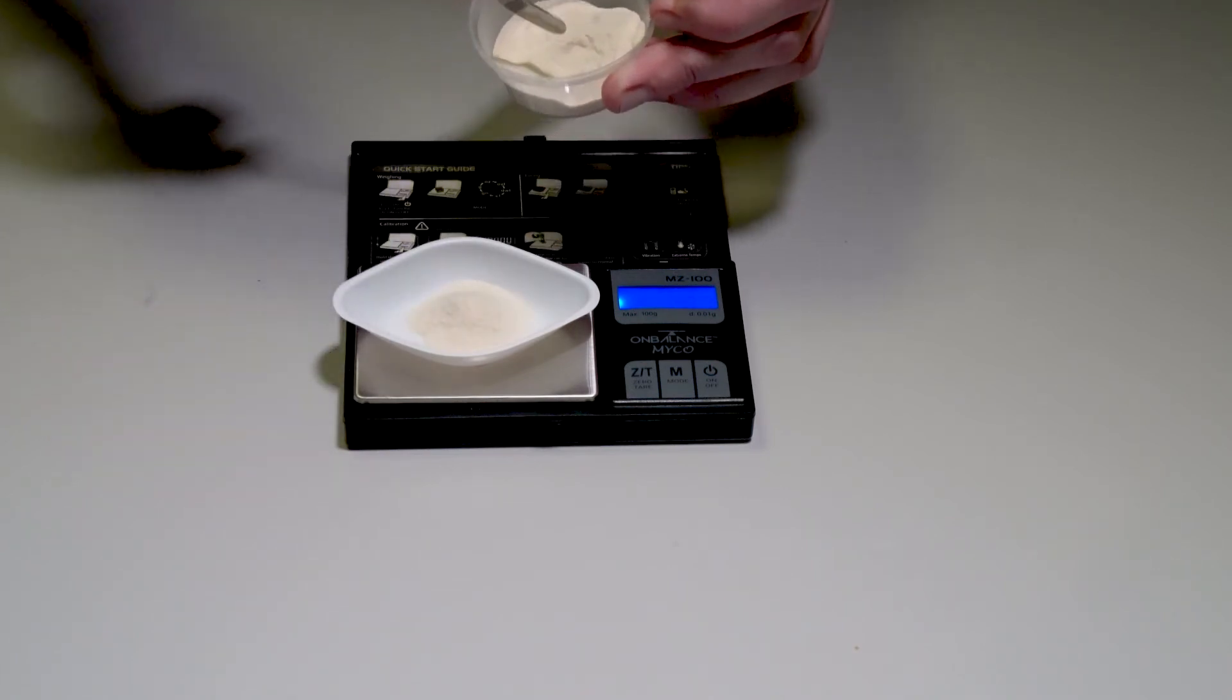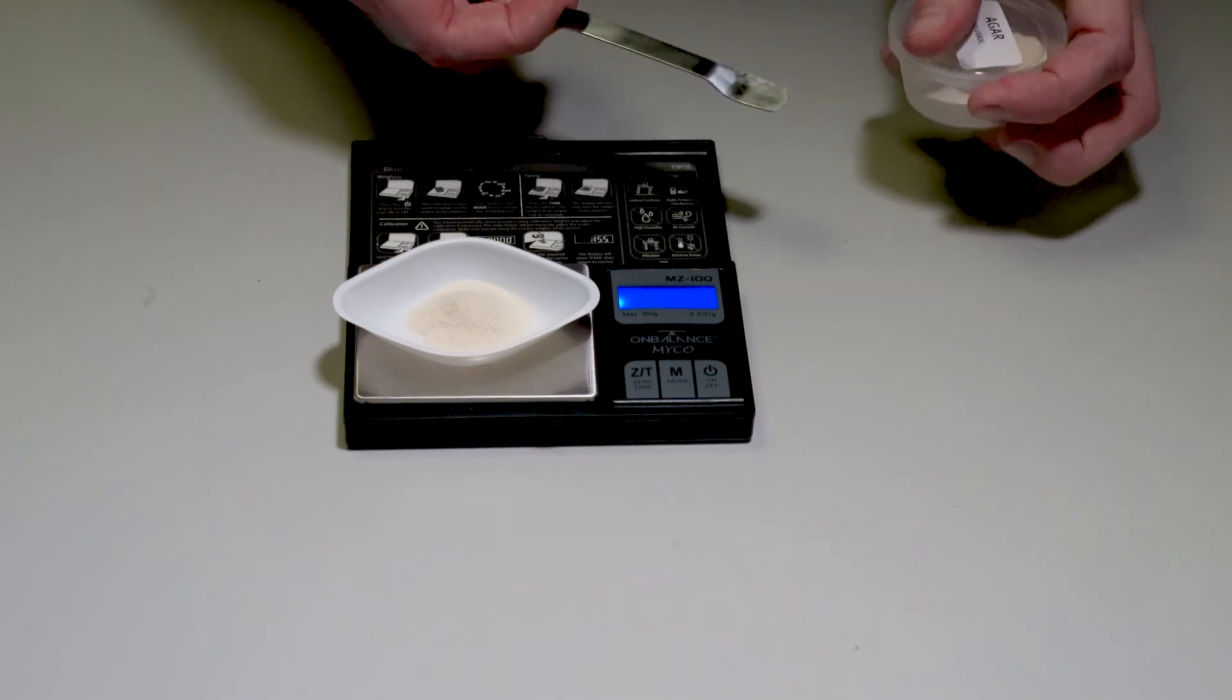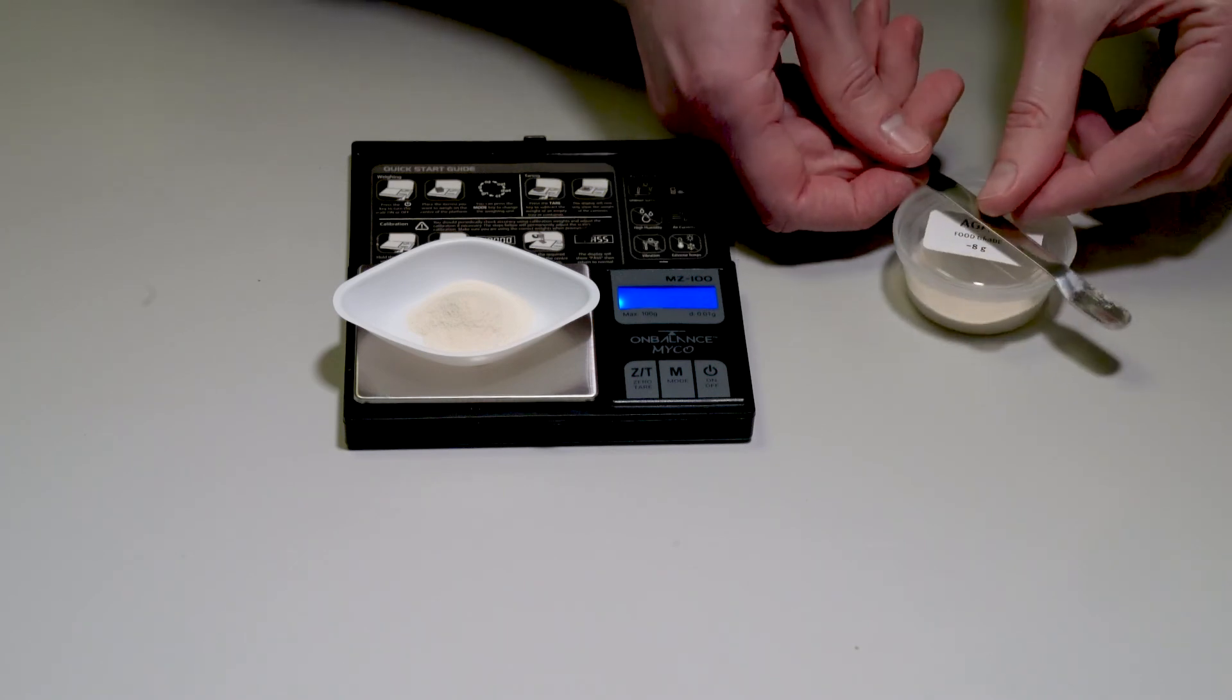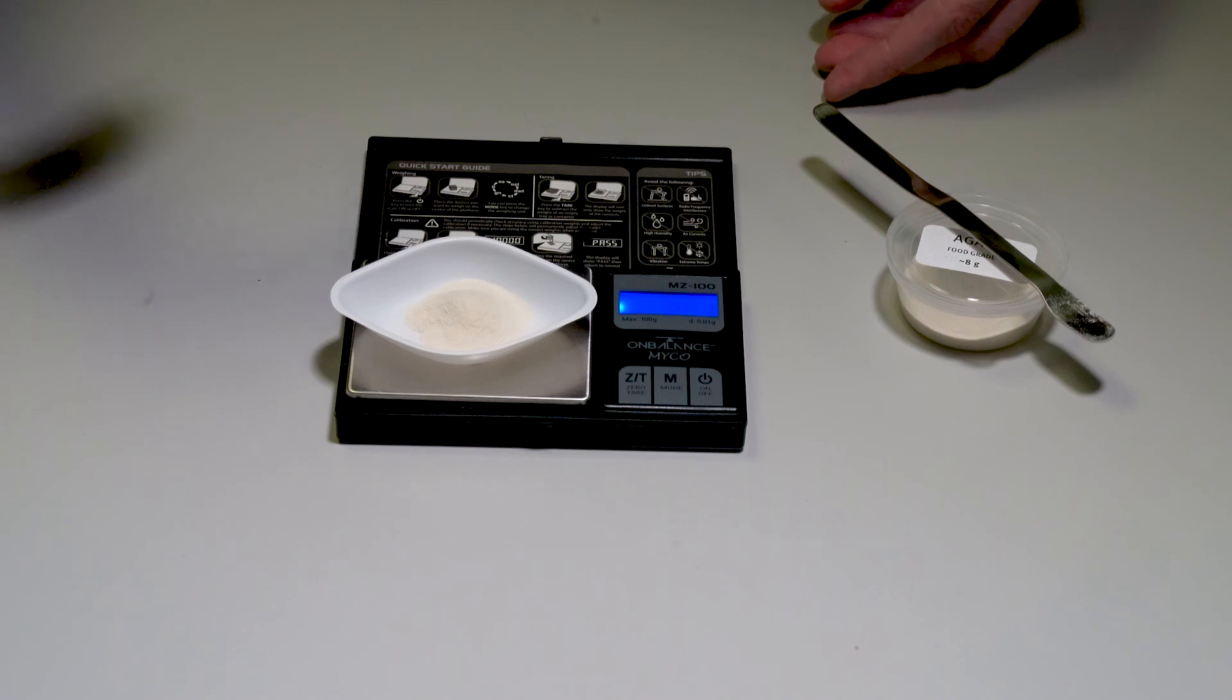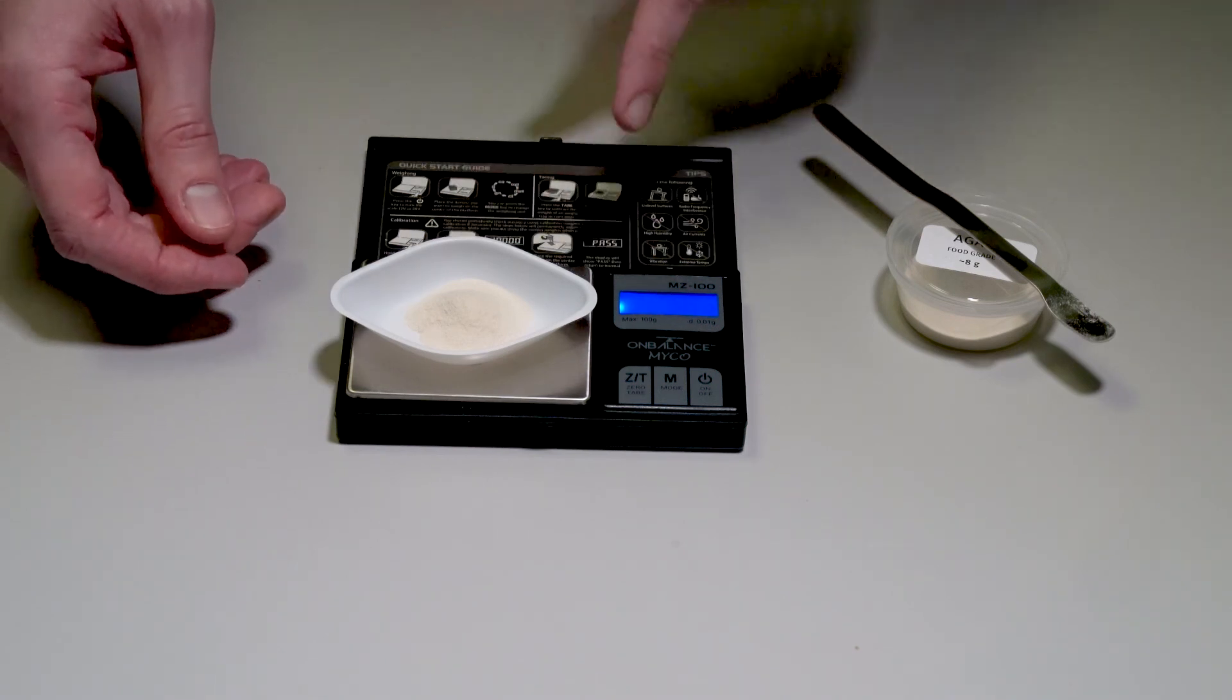There's no need to get these weights perfect, so I have 2.03 grams of agar there. It's important, however, to record exactly how much you used in your personal experiment. In my lab notebook, I would record 2.03 grams of agar. Don't forget to wipe up any spills immediately after using the balance.